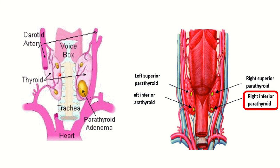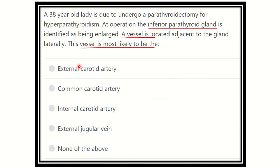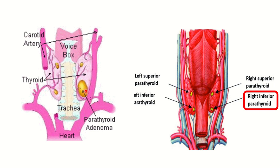In this picture, we can see the upper one is the superior parathyroid gland and the lower is the inferior parathyroid gland. We can see just laterally to the inferior parathyroid gland there is a large vessel, a large artery. In the second picture, we can also see the inferior parathyroid gland, and lateral to it is a vessel — and we know this vessel is the common carotid artery.